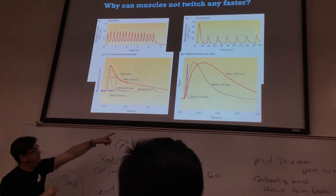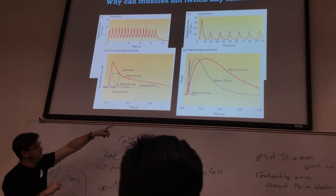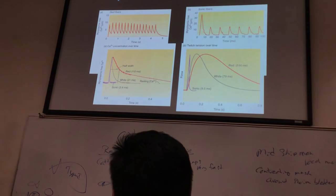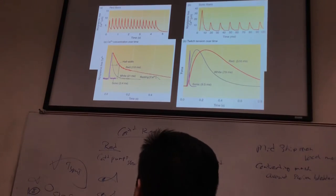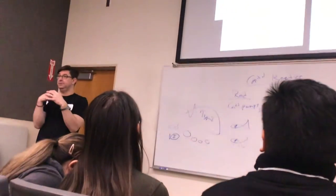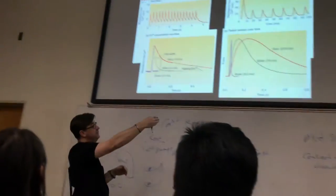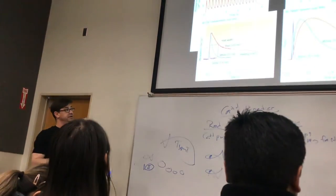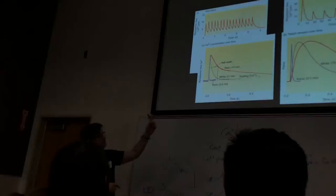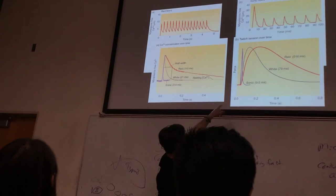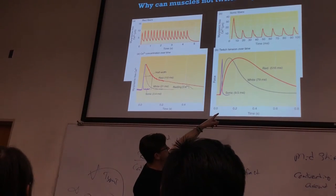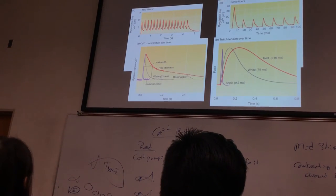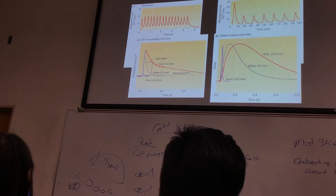Here we're looking at free calcium levels and the actual force being generated. The force is the same whether it's a sonic, white muscle, or red muscle, because they're all working via actin-myosin filaments overlapping each other. It's just the time needed to reach maximal force. Sonic muscle fibers do it in milliseconds. White muscle takes a little longer, but red muscle takes almost 500 milliseconds — half a second.